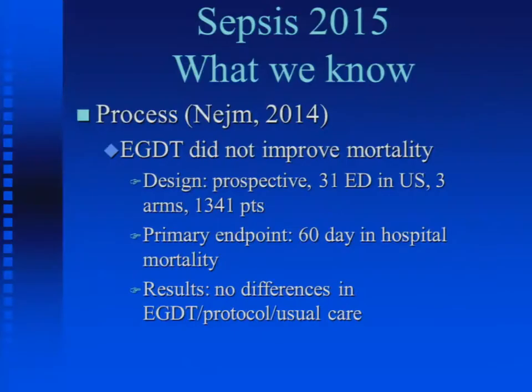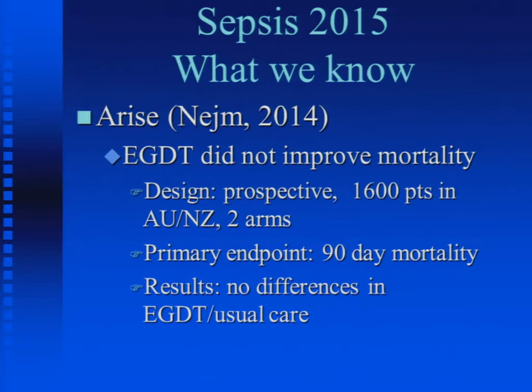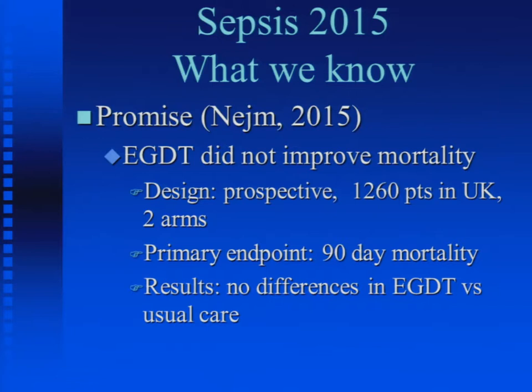We have three trials to go over. PROCESS: early goal-directed therapy did not improve mortality. ARISE: same thing. And the ProCESS trial also showed early goal-directed therapy did not improve mortality. So we have to start thinking: are we harming patients with our current approach?